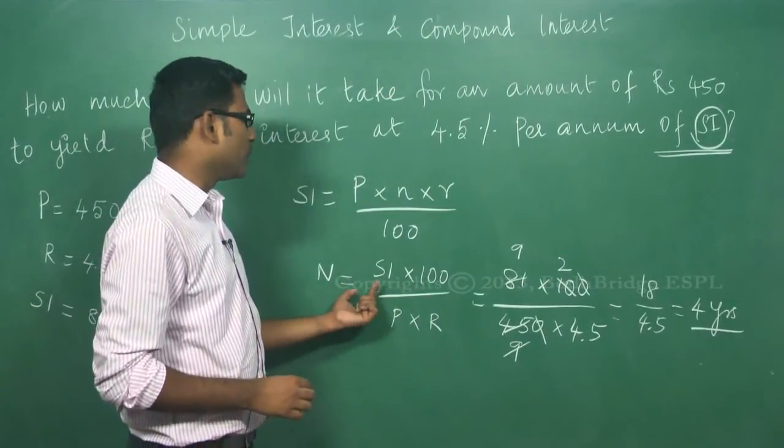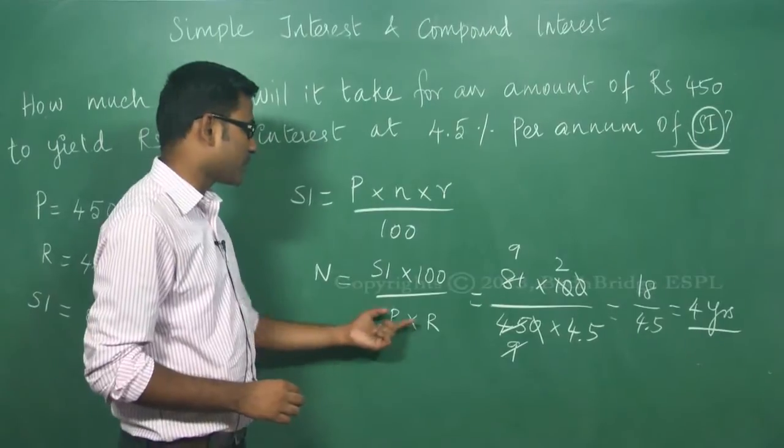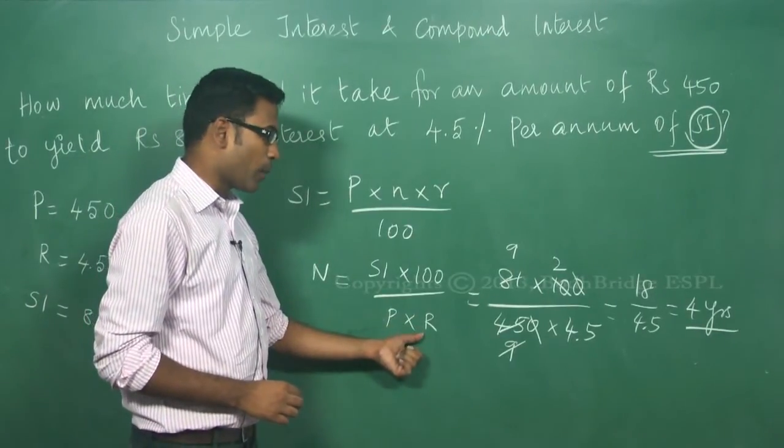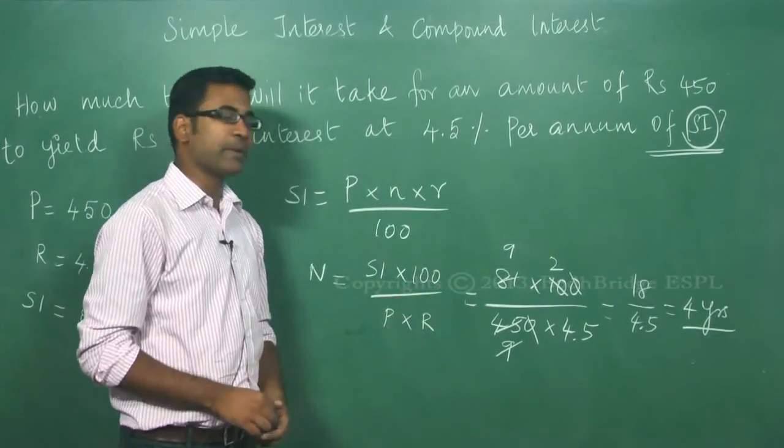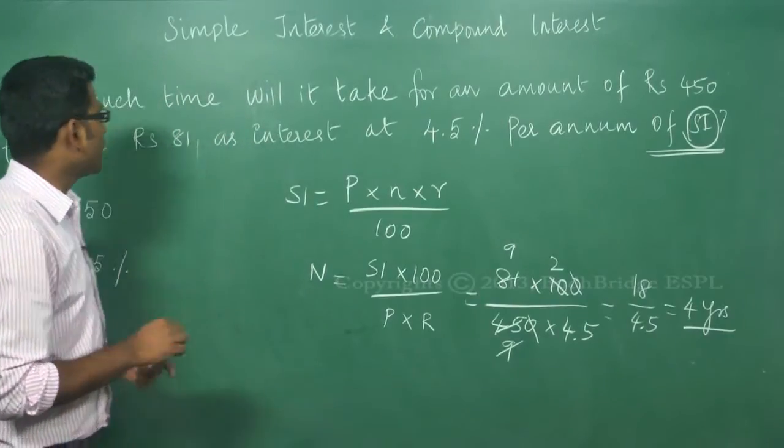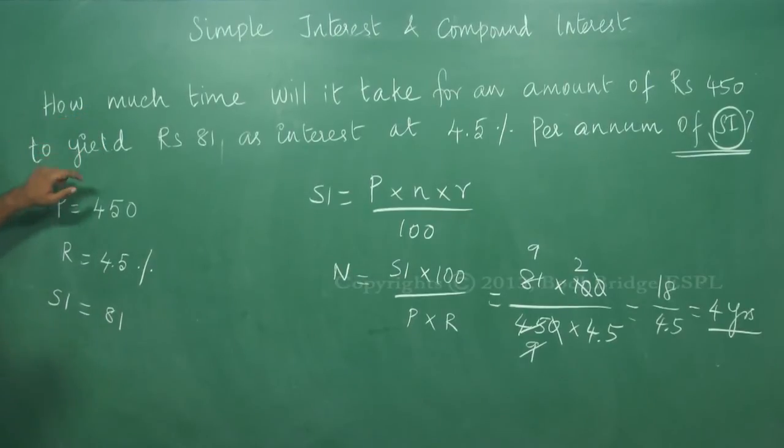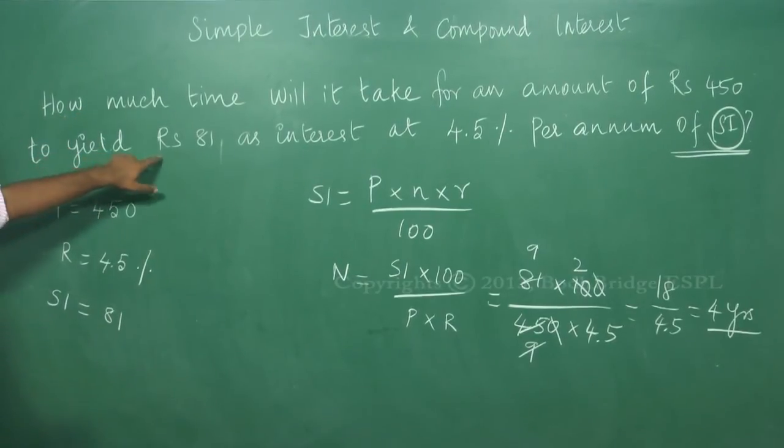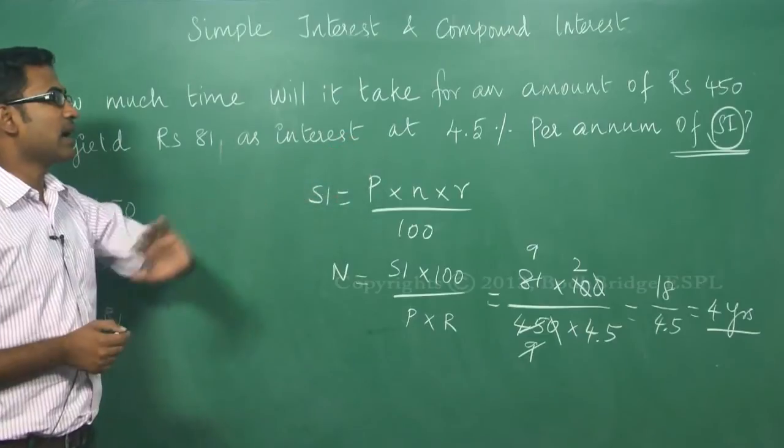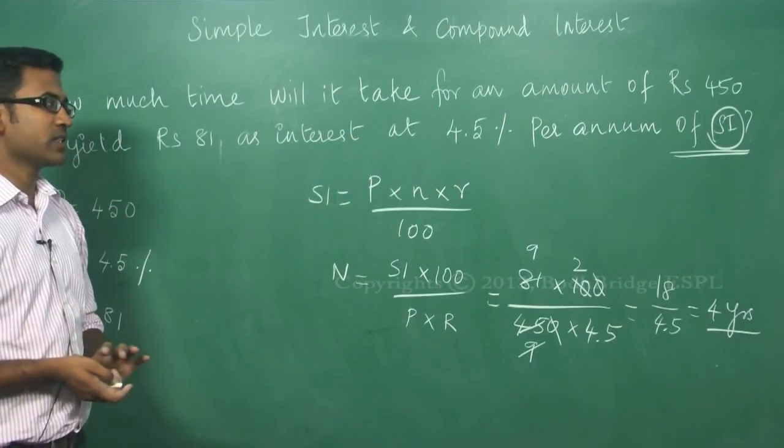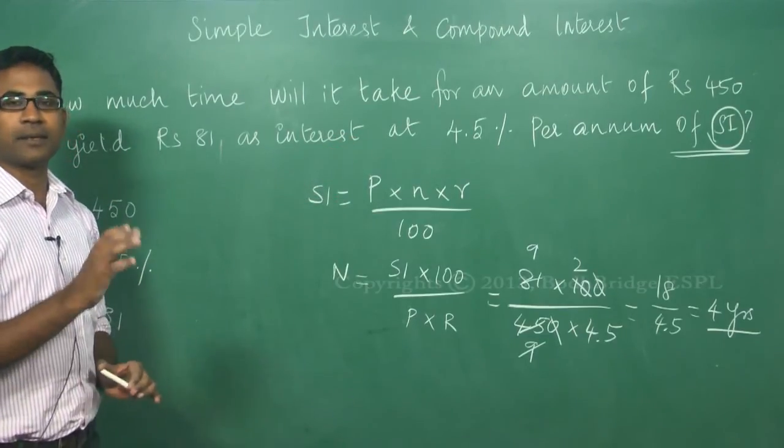Just I am substituting the value simple interest as 81, principal as 450, rate of interest is 4.5. Simplifying that I am getting 4 years. So what it means? The time taken is 4 years for an amount of Rs. 450 to yield Rs. 81 as interest at 4.5 percentage per annum in simple interest.